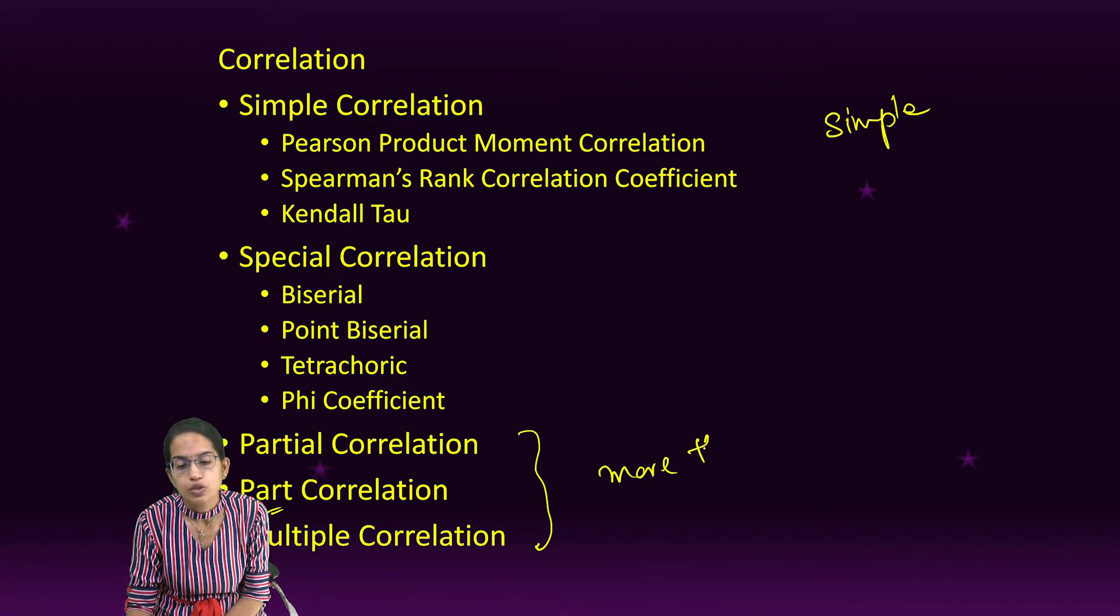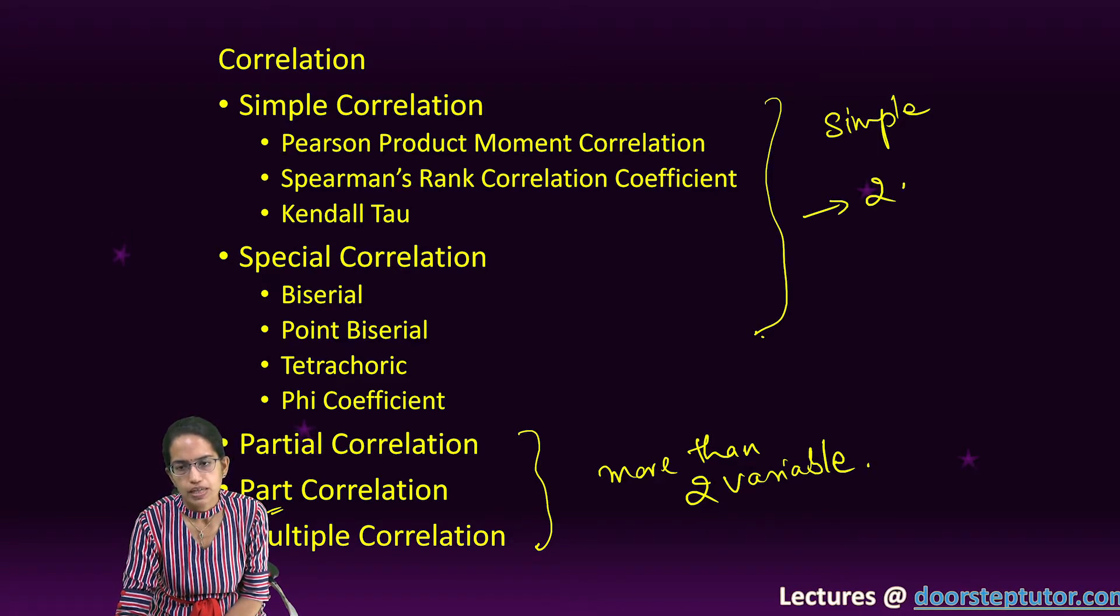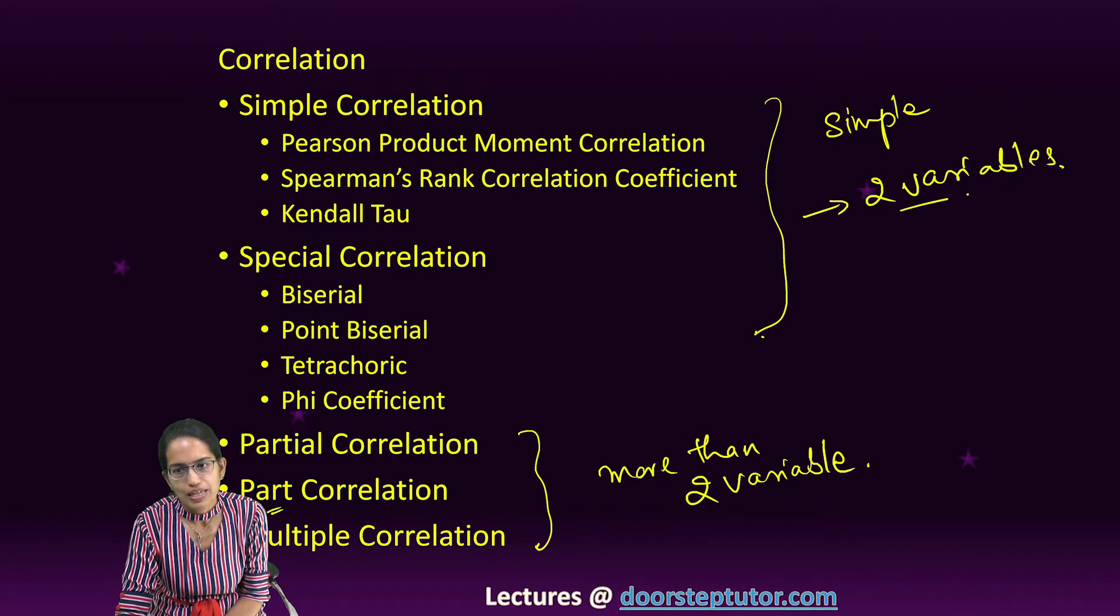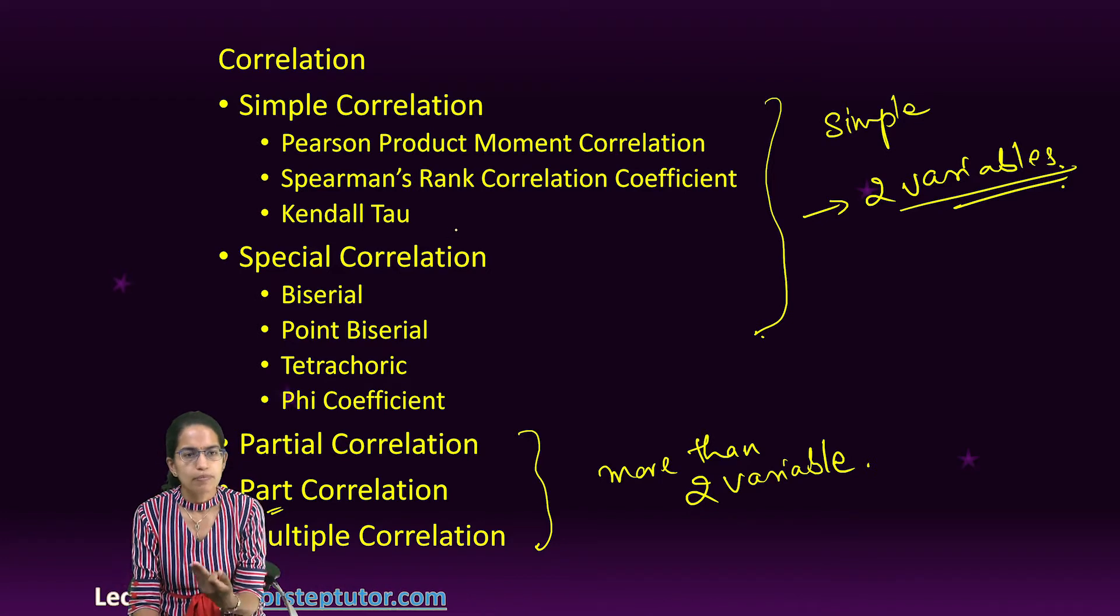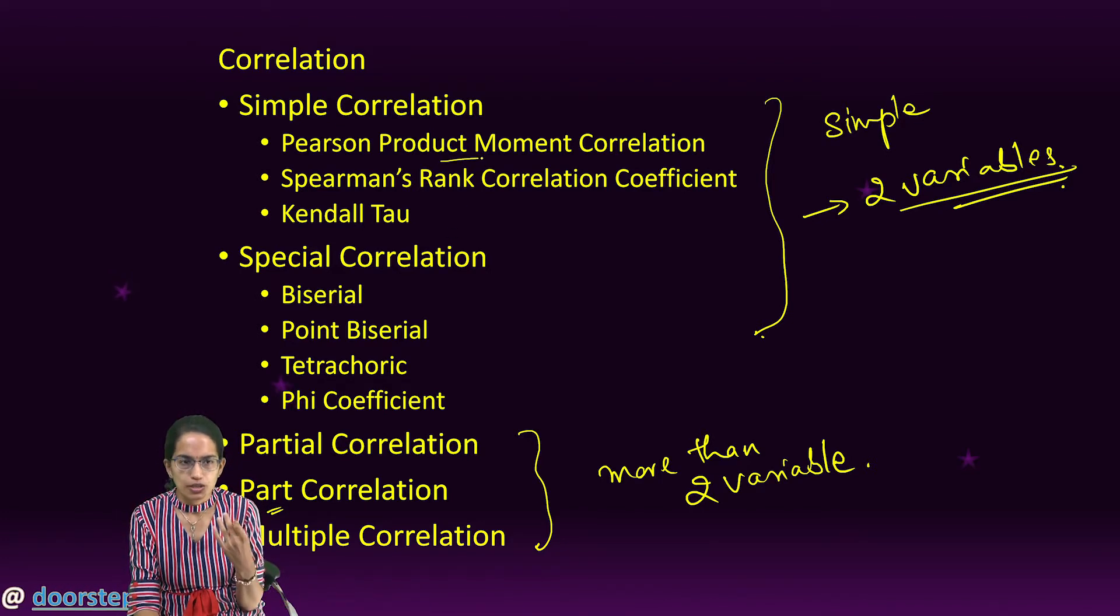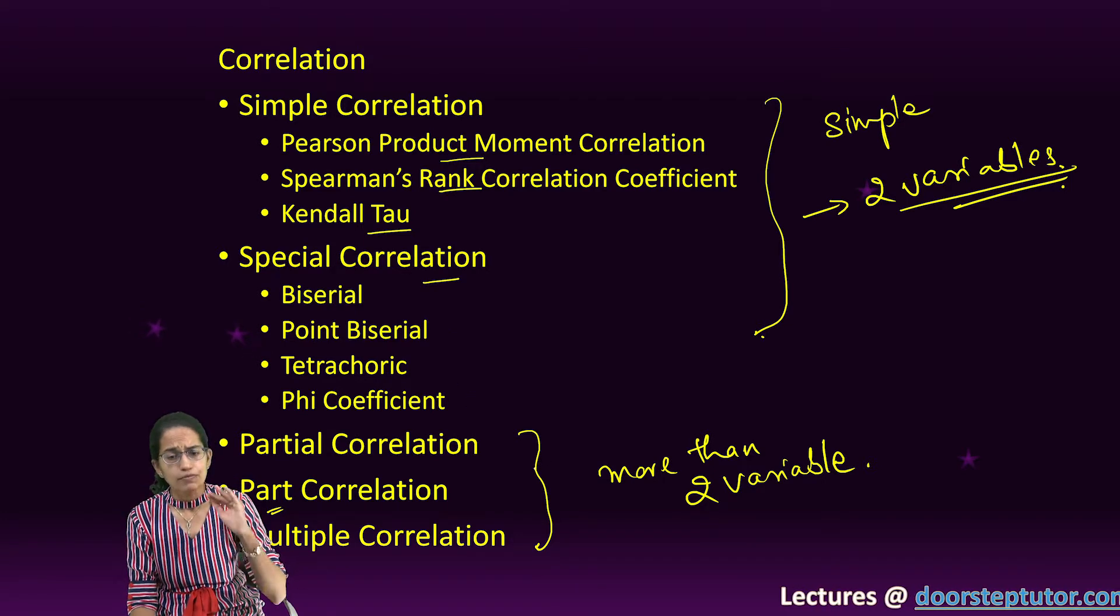Partial, semi-partial, or multiple correlations are used when there are more than two variables. However, simple correlation and special correlation is applied when there are two variables. When there are two variables, we focus on simple correlation. The common methods of simple correlation are Pearson Product Moment, Spearman's Rank, and Kendall Tau.